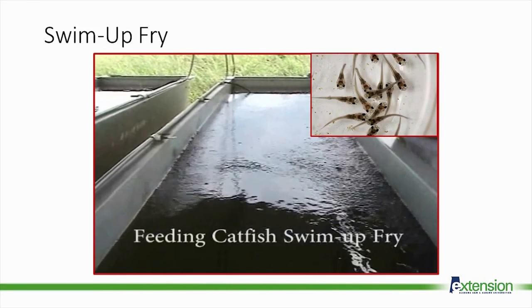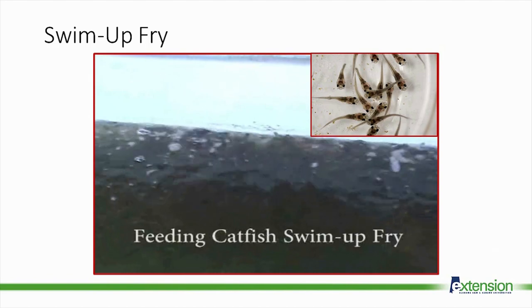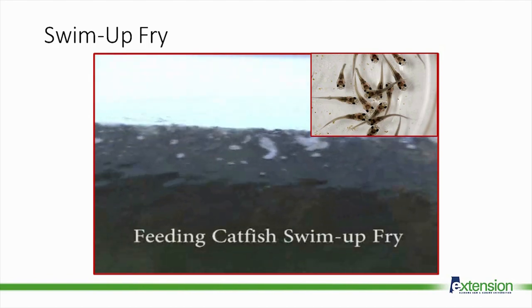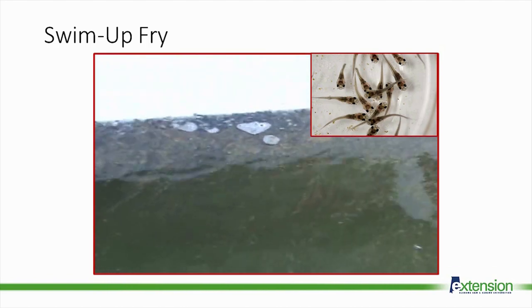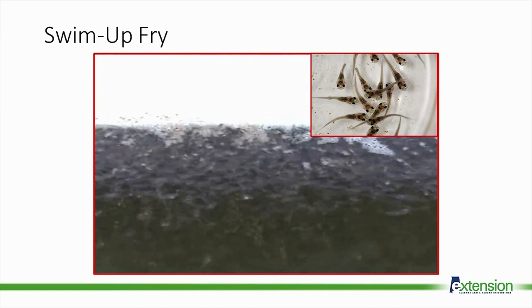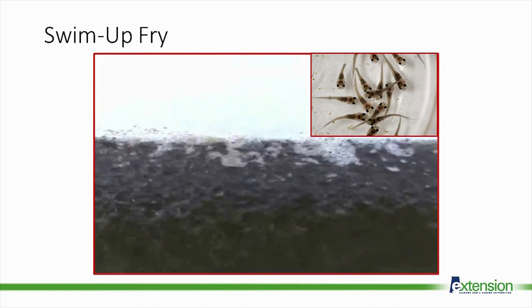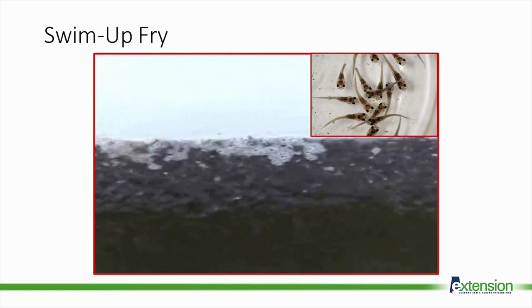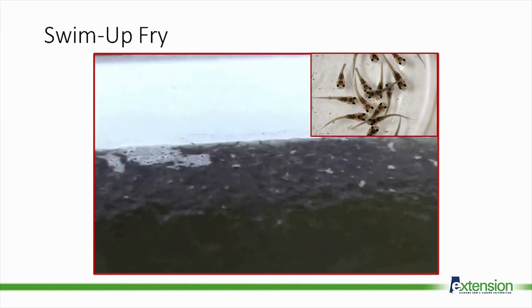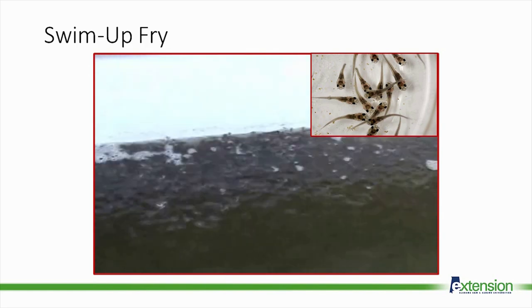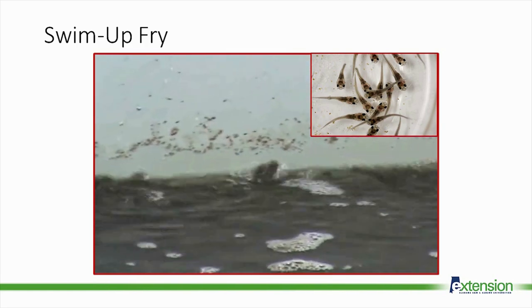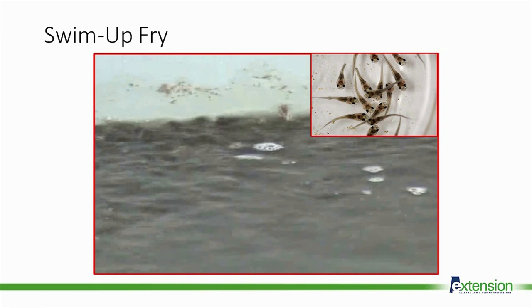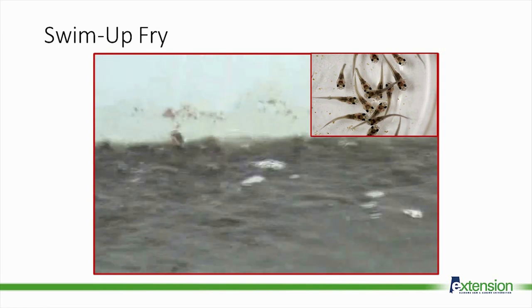Once counted, the sack fry are placed in a larger trough. Once the yolk sac is absorbed, the fish will begin to turn black and swim to the top looking for feed. At this point, they're called swim-up fry. They are fed four to eight times a day until they grow strong enough to put into the fingerling ponds.